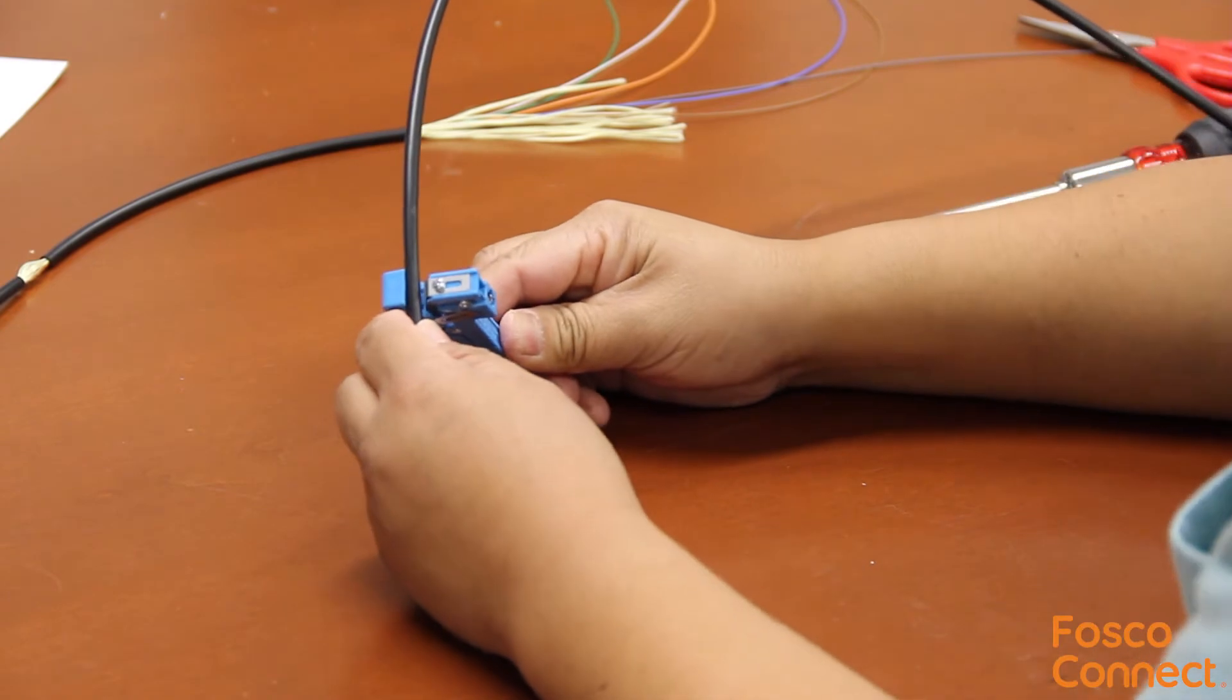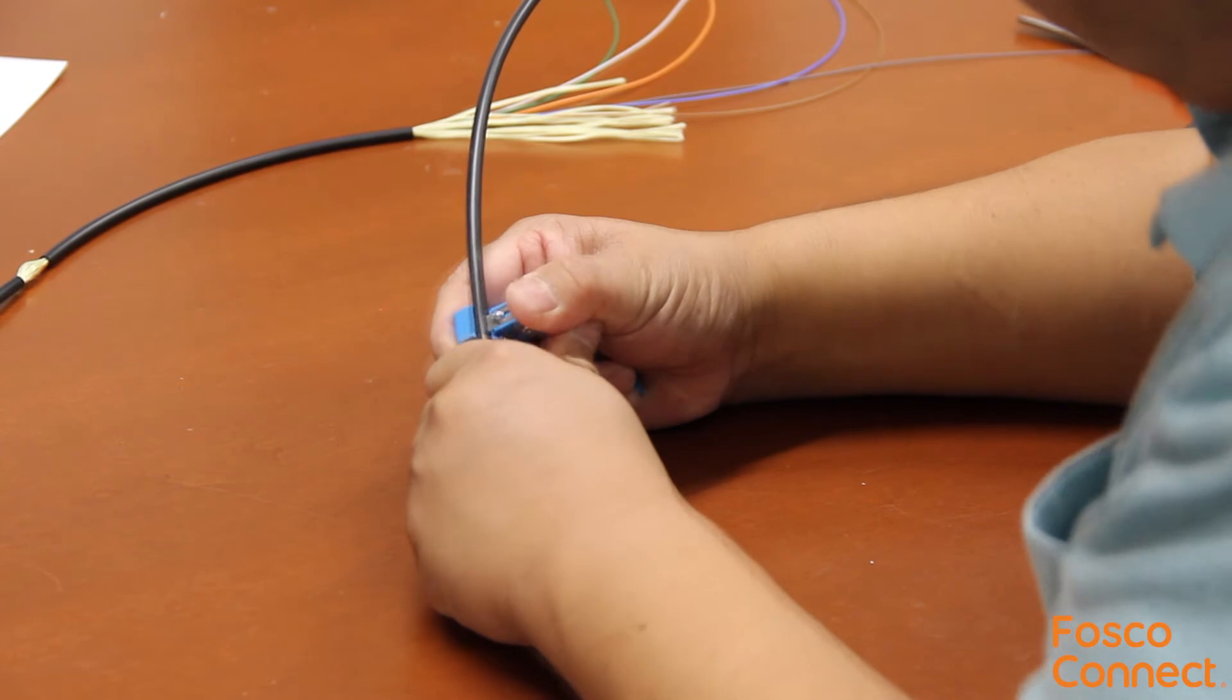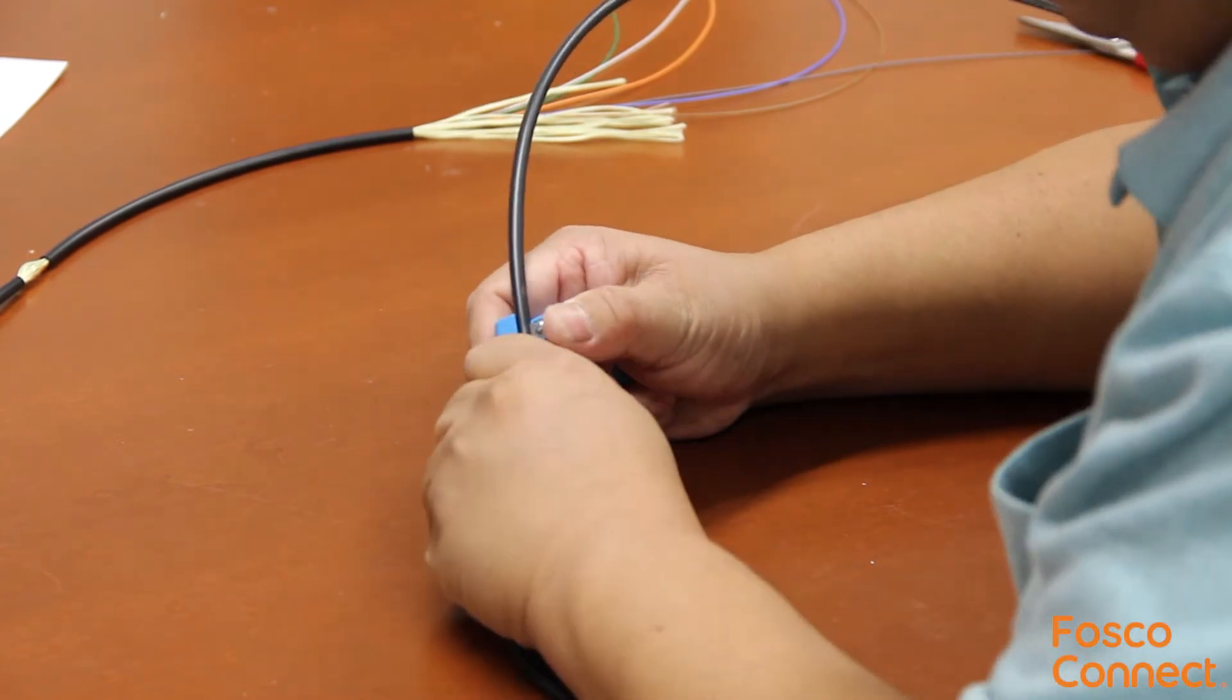Put the cable where the longitudinal cut starts. Press the blade down so the blade cuts into the material. Then pull it along the buffer tube until it needs to stop.